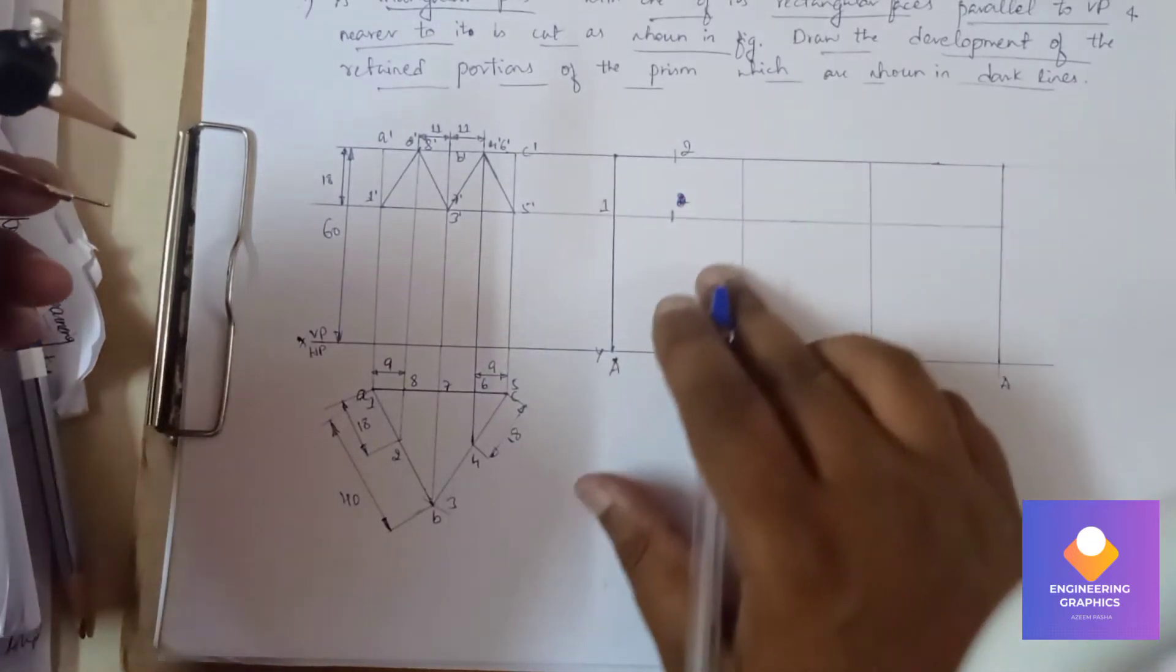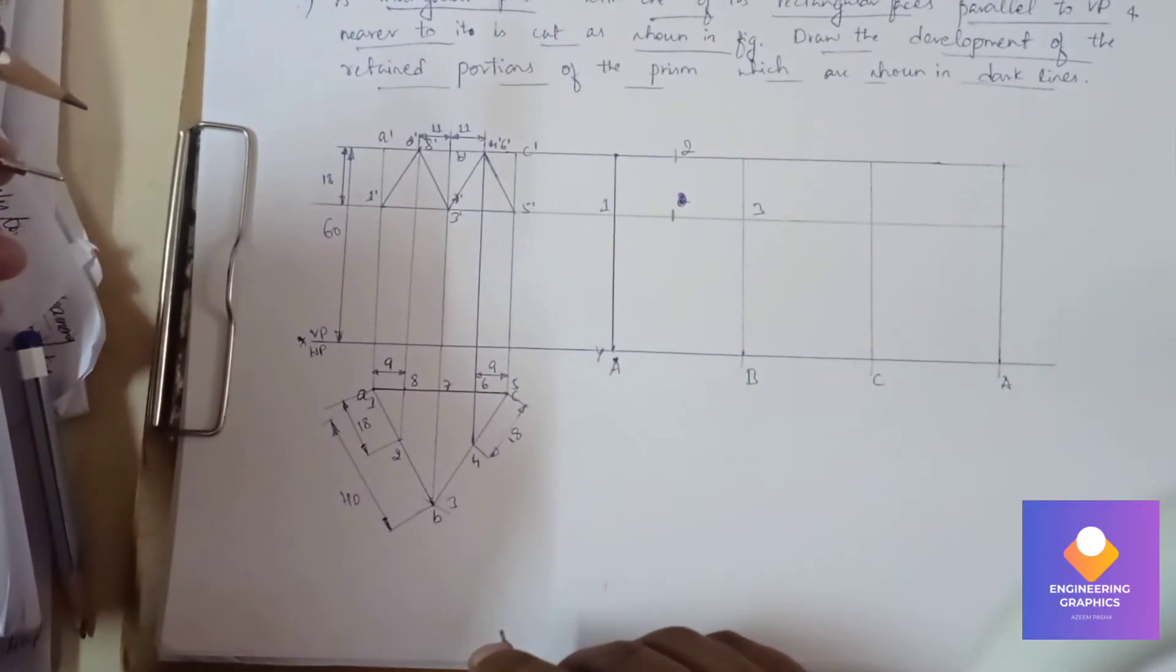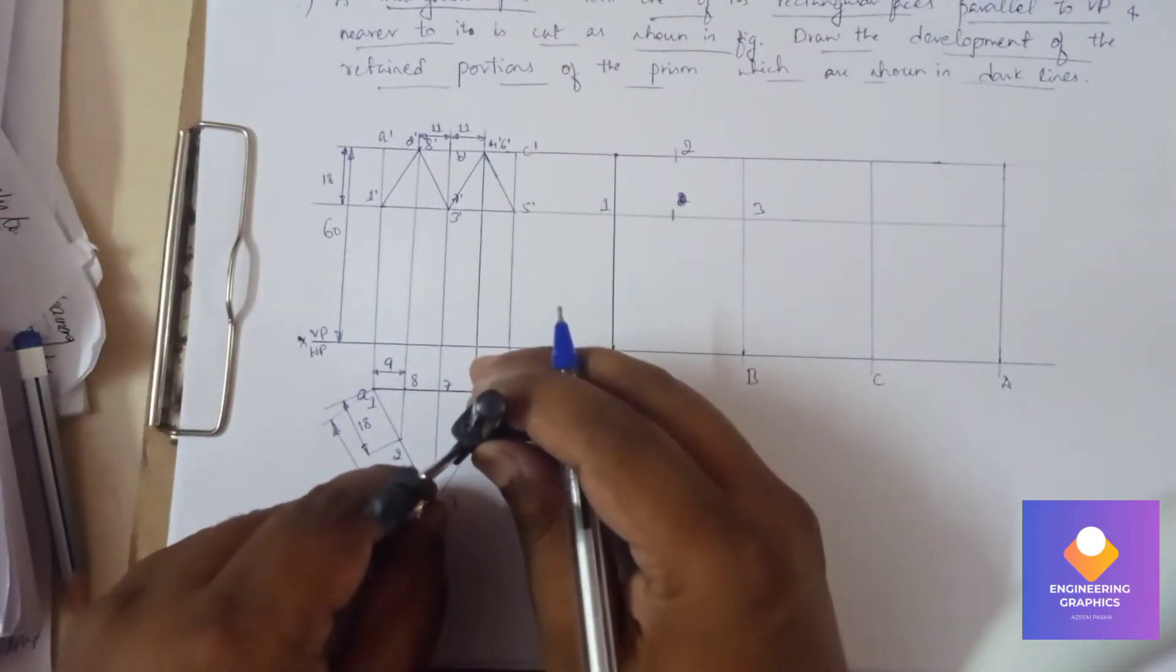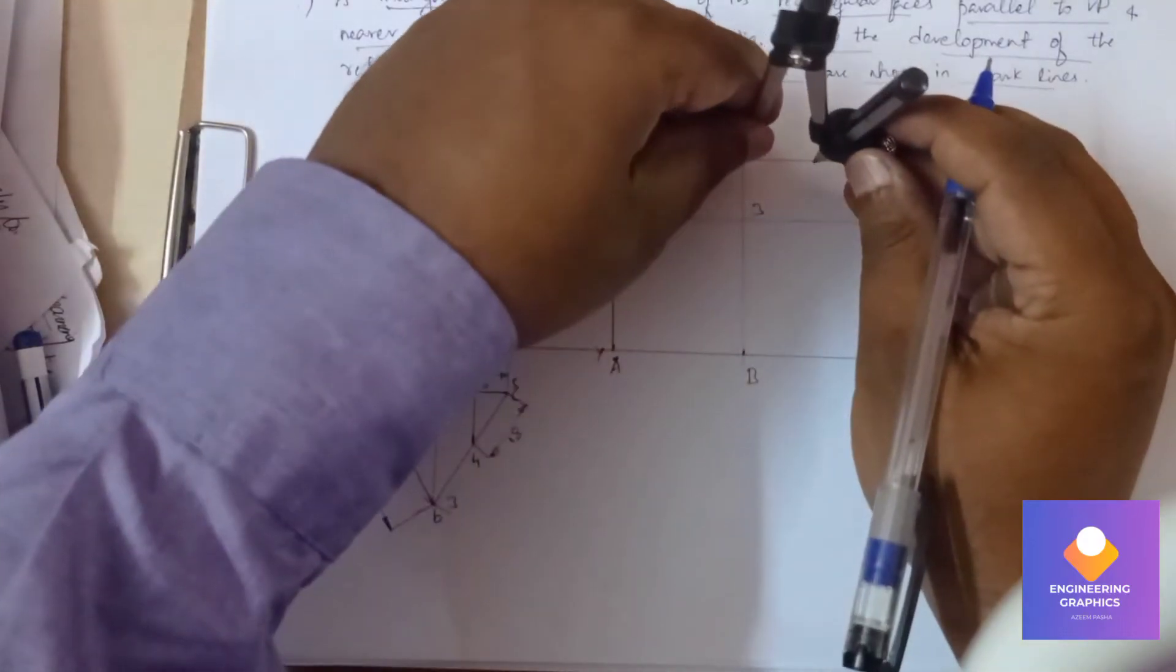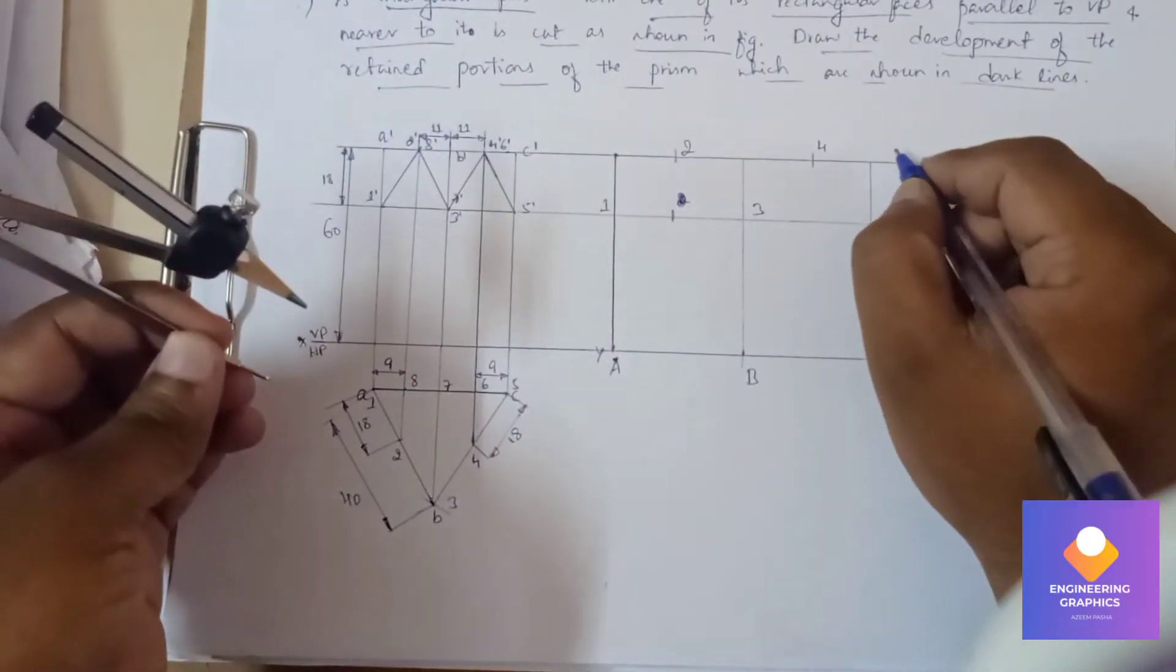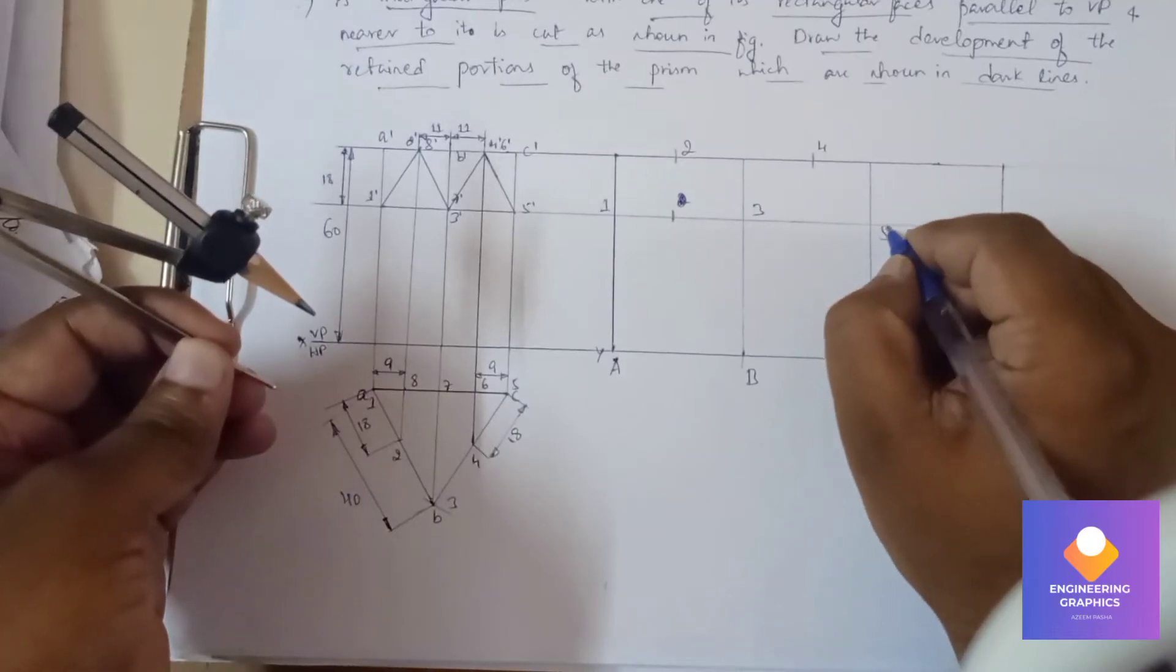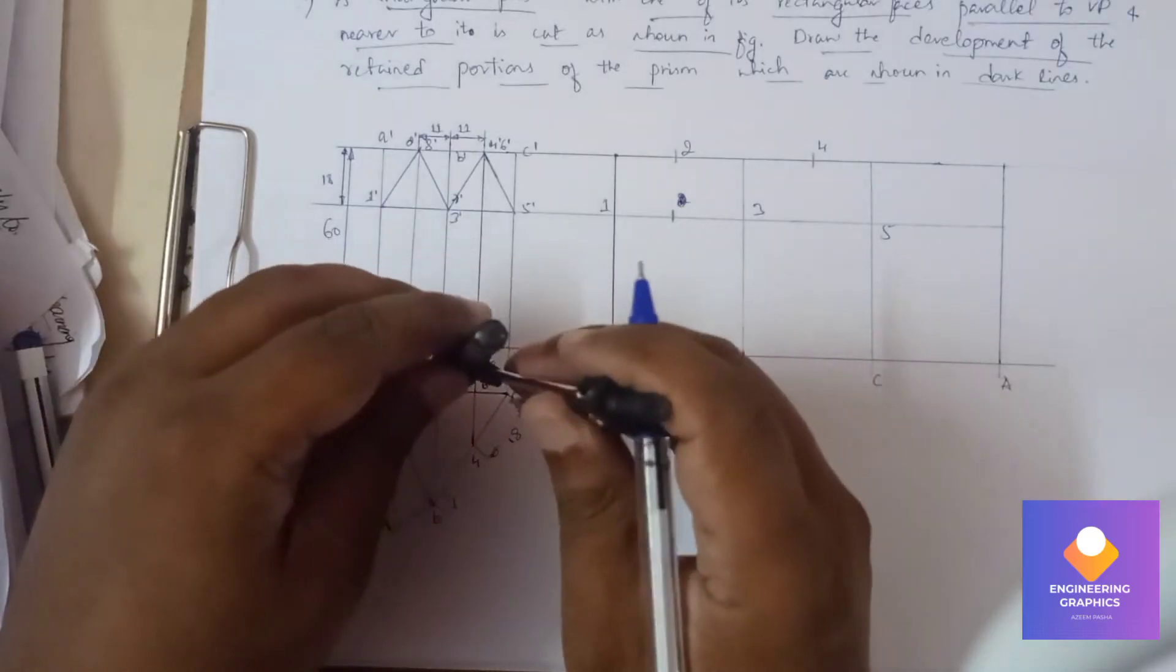This point number 2. Then 3, we get it here. Again 4, you can see that we need to measure that 3 to 4 length from the top view. We should measure that and cut the arc here.